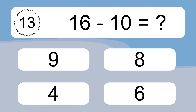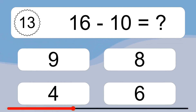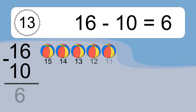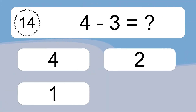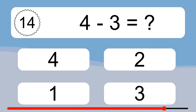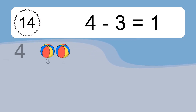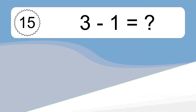16 minus 10 equals 6. Let's count it: 15, 14, 13, 12, 11, 10, 9, 8, 7, 6. 4 minus 3 equals what? 4 minus 3 equals 1. Let's count it: 3, 2, 1. 3 minus 1 equals what?